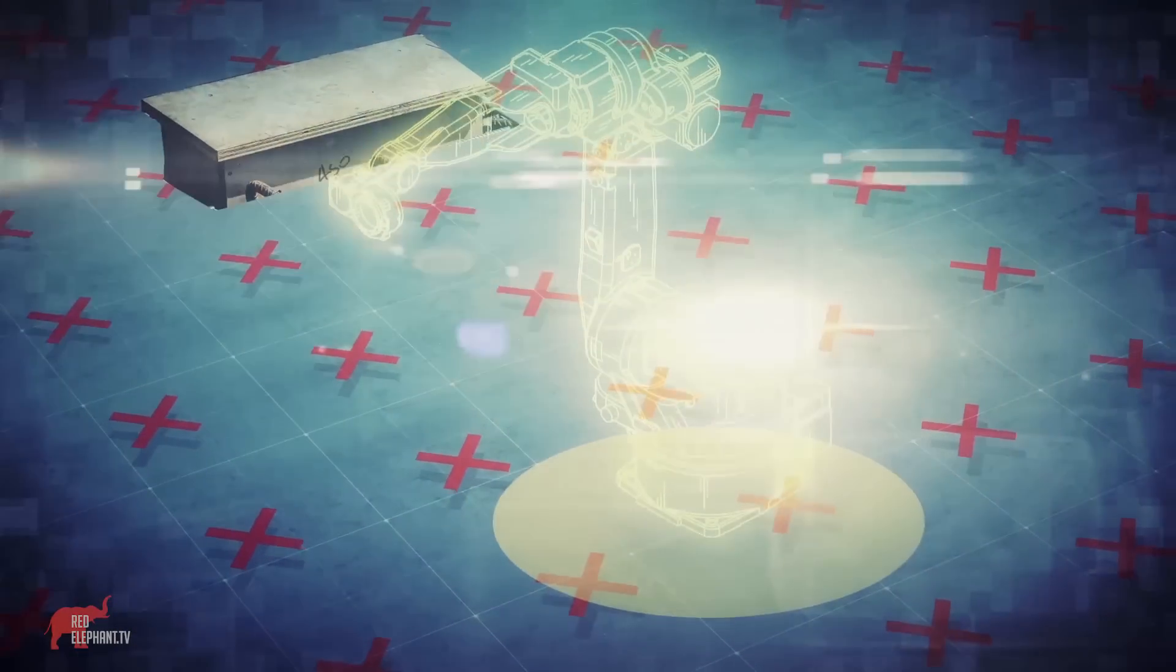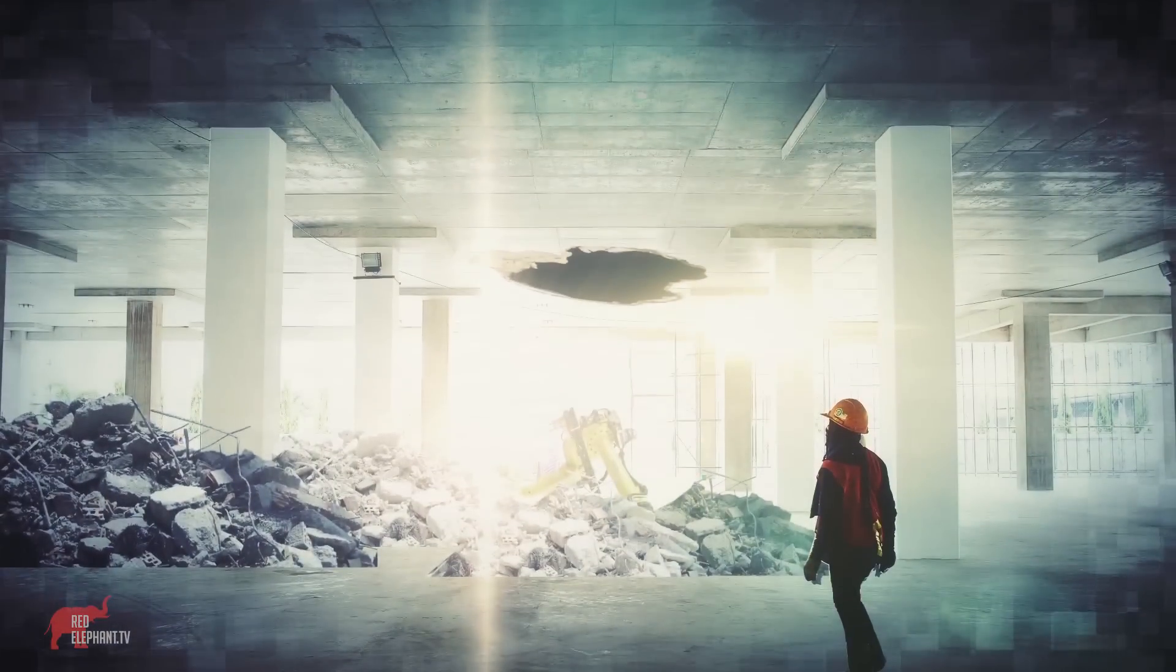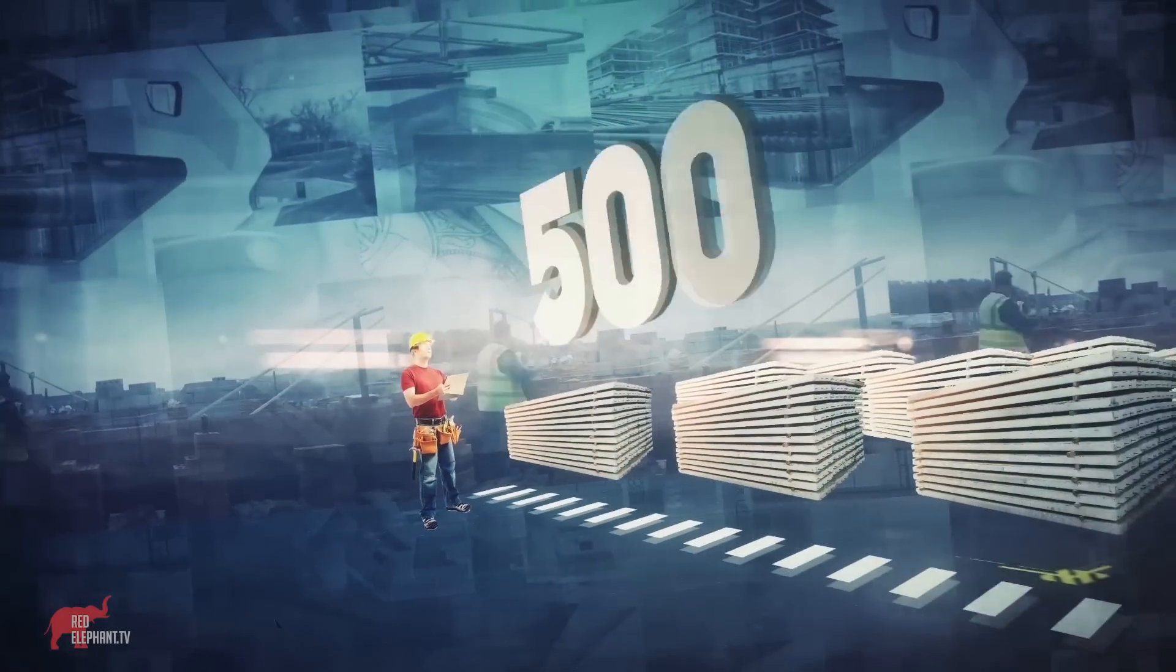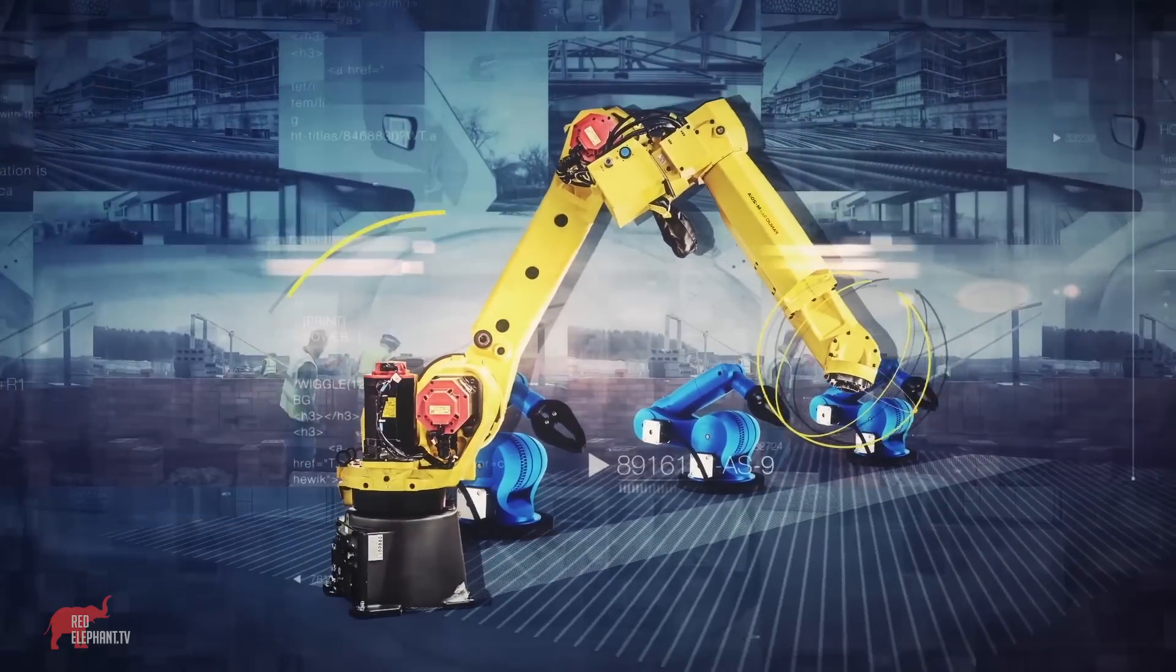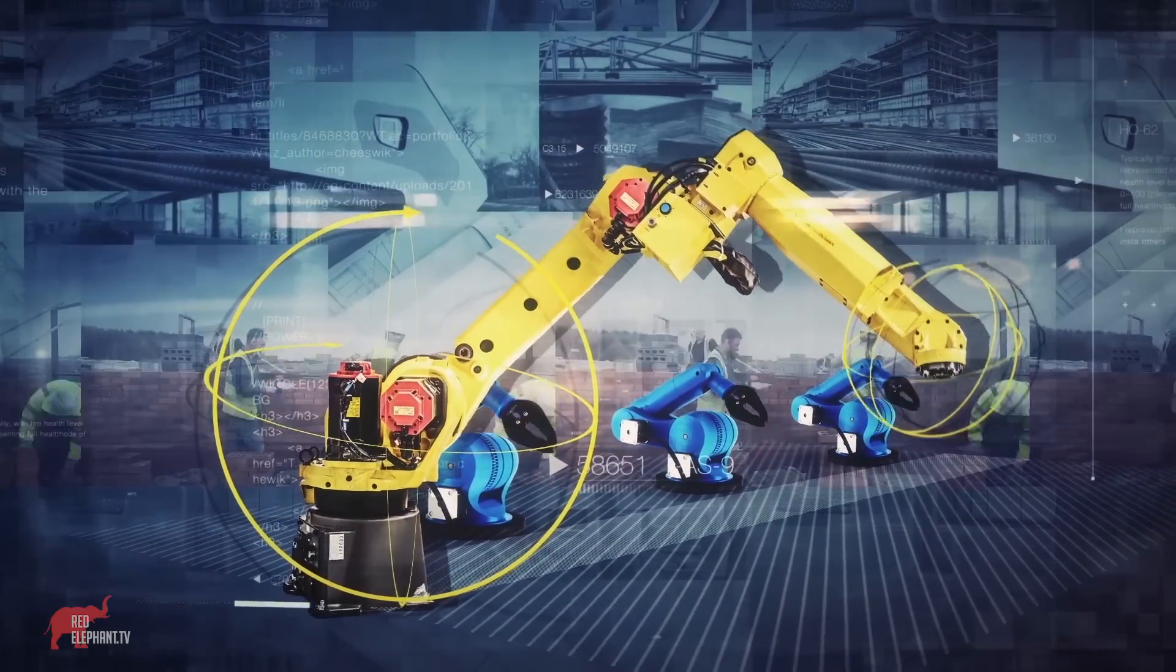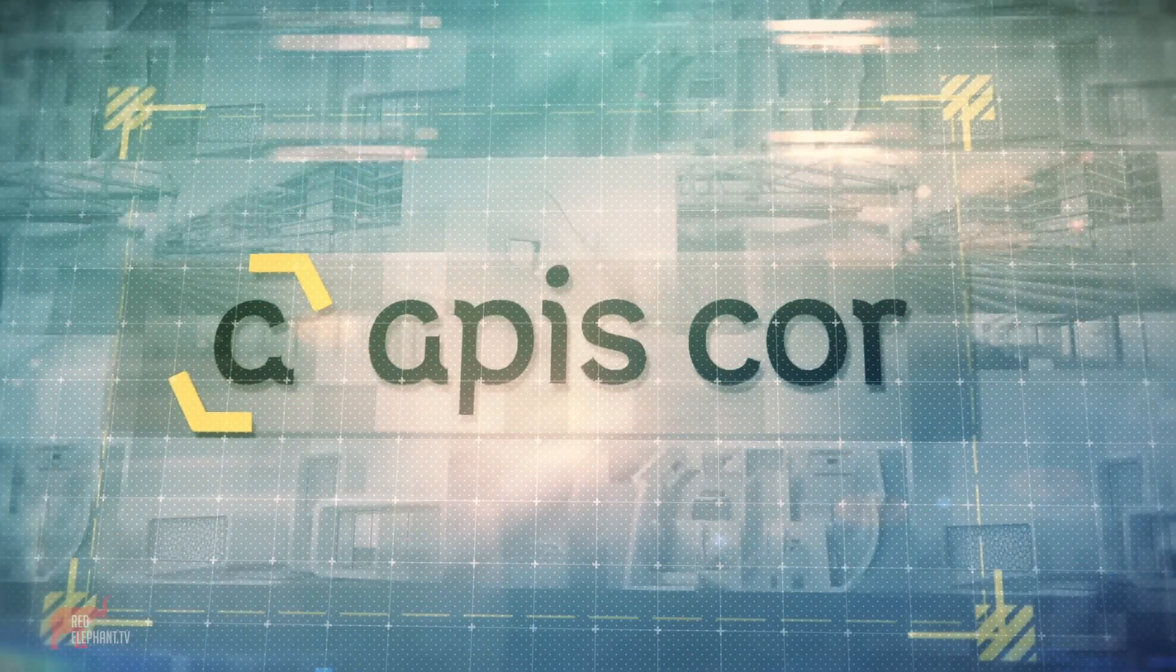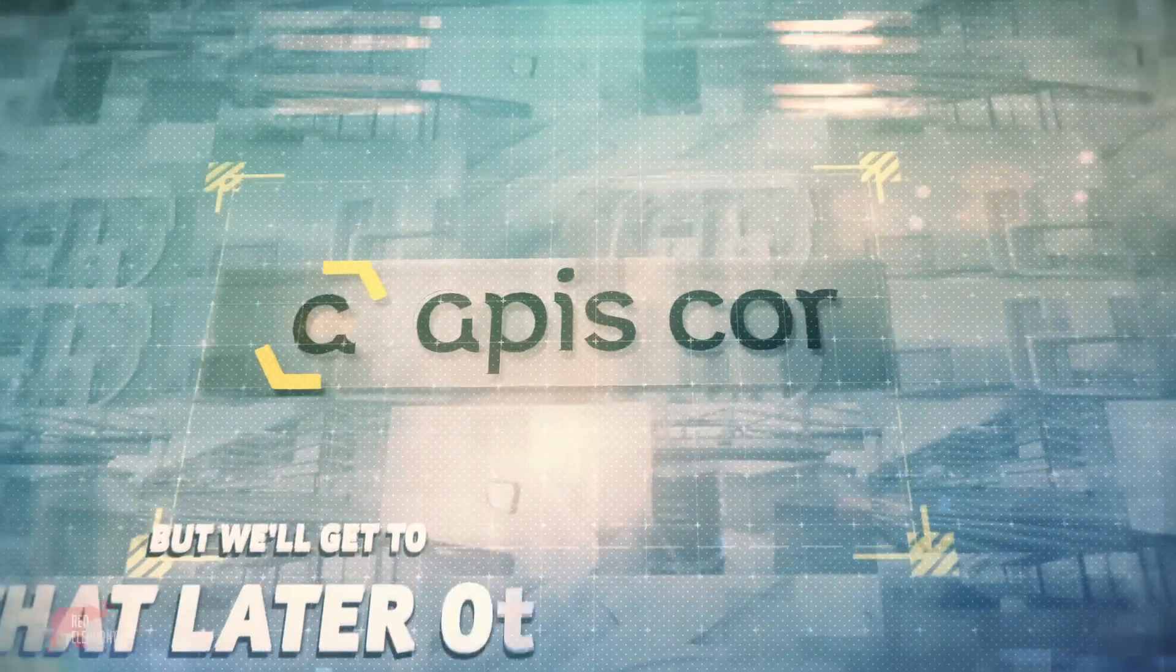You can't place it on a slab. It will simply break through the floor. The permitted standard load on a floor slab is 600 kilograms per square meter. And due to lack of stabilization at maximum arm extension, the robot will simply topple over. And to solve this, it will be necessary to either complicate the design or securely affix the robot in place, or change the entire mechanism, which is exactly what APIS Core did.